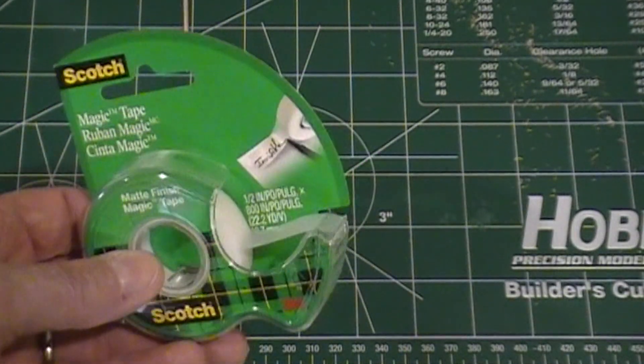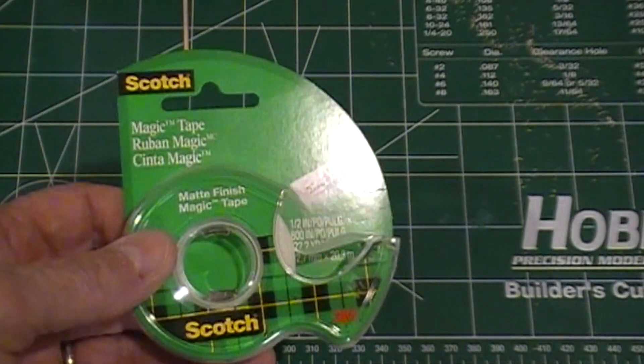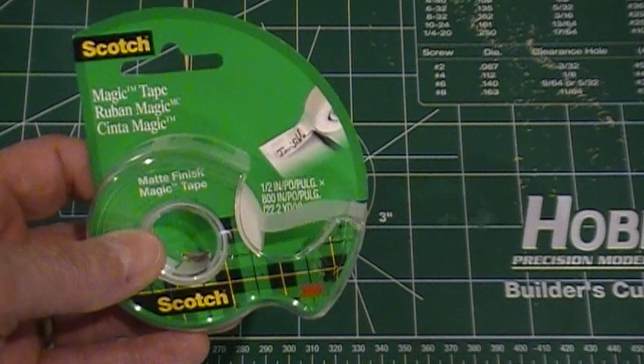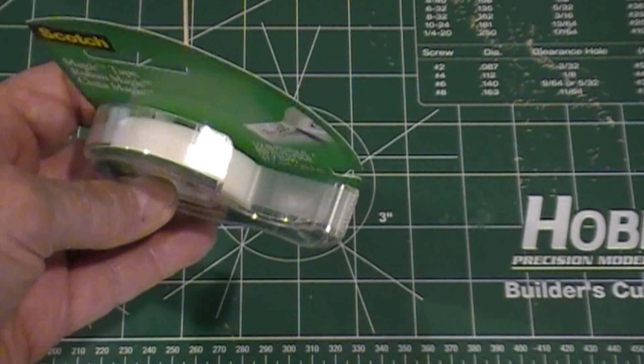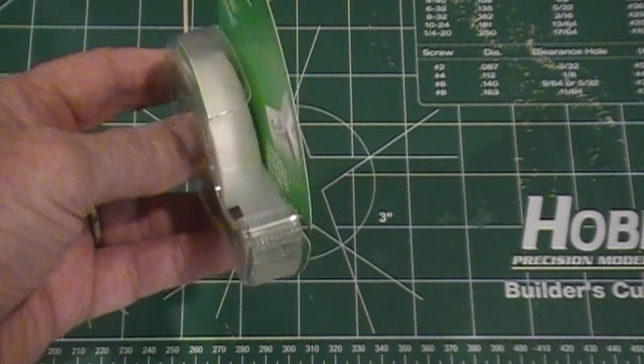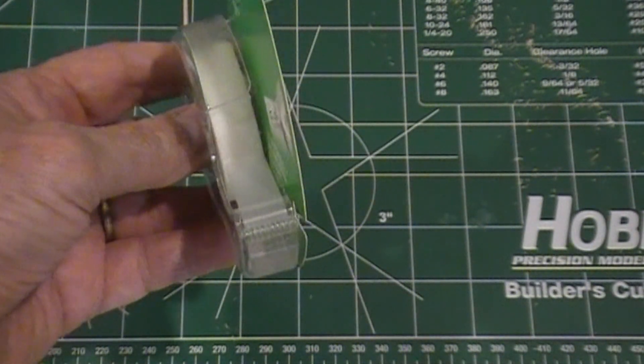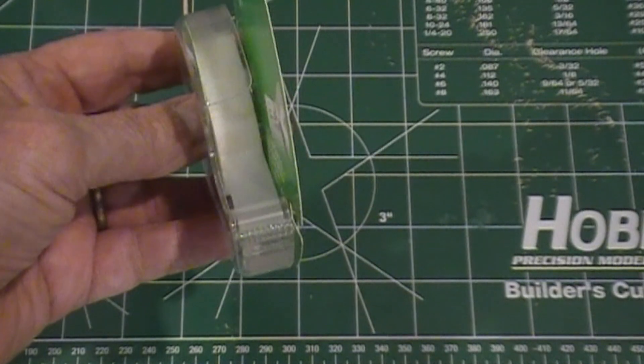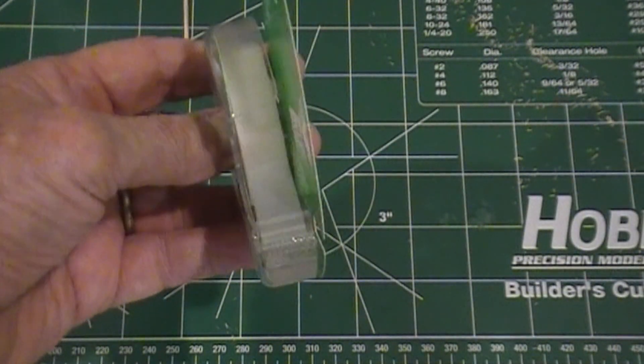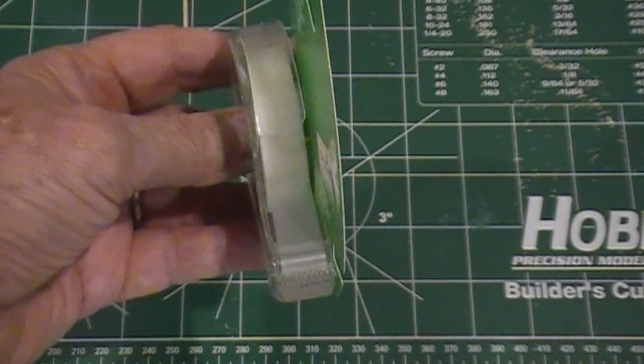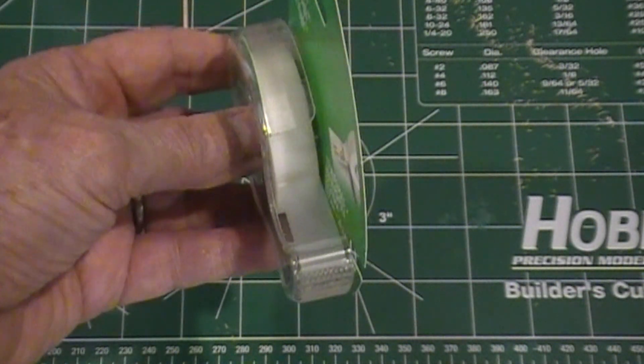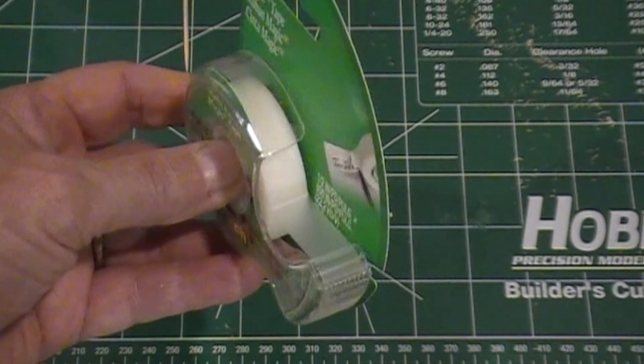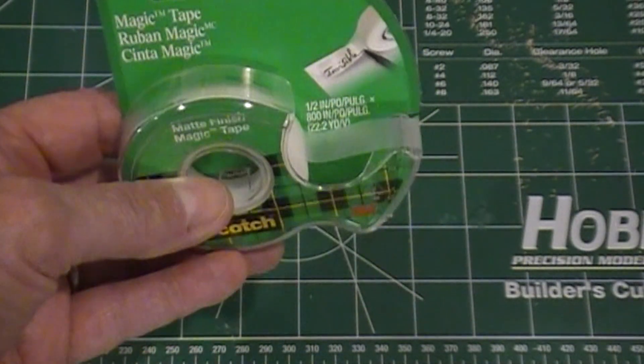I'm using half inch Scotch transparent tape. For HO, the half inch works out quite well, makes a nice size bale. But for N, it's a little bit too wide. What we need to do is reduce that by about half. I couldn't find any quarter inch, so I'm going to show you what I did with that.